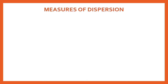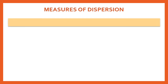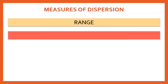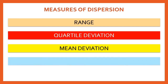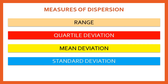Now let's look at the list of measures of dispersion we will study in this chapter. Since you are in 11th standard Commerce, not all high-level measures are included — only the most basic and useful ones. There are four measures: number one is Range, number two is Quartile Deviation, number three is Mean Deviation, and number four is Standard Deviation.